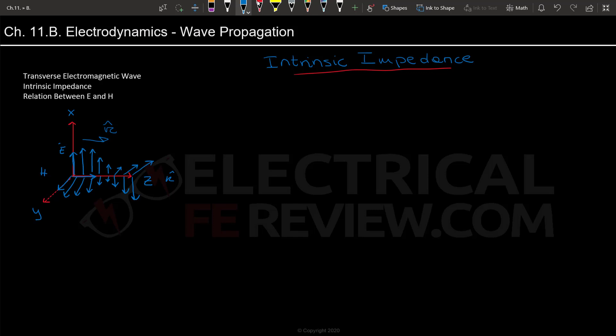Intrinsic impedance is written with the symbol eta, which is kind of like a curly N. And it will be equal to the, in this case, K is not the direction of propagation. It is actually the wave number. K would be given as omega square root of mu epsilon. But in any case, you'll almost never use this formula.